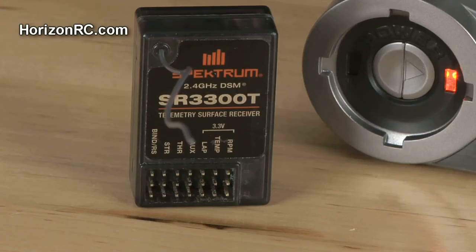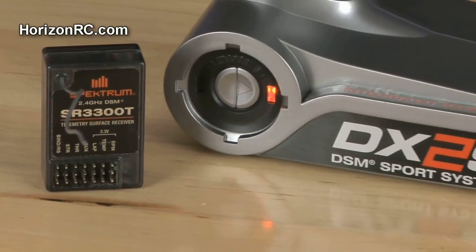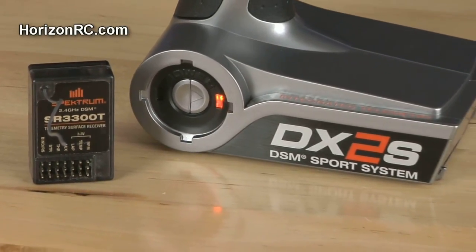What's included with the DX2S out of the box is the SR3300T receiver which is telemetry compatible. So the DX2S does do telemetry just like the DX3S. It has the same gauges: RPM, speed gauge, battery gauge, and temperature gauge.